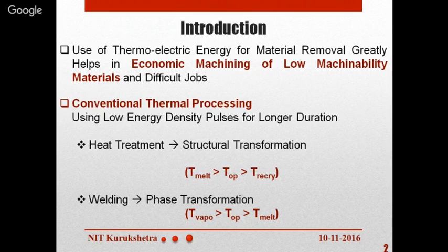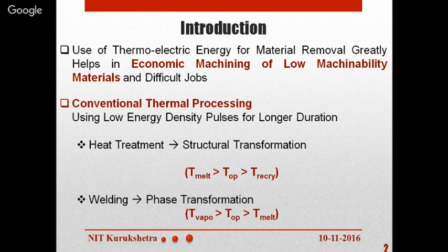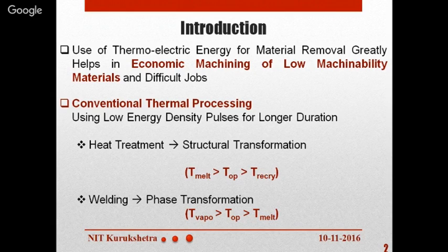For example, for annealing a 0.8% carbon steel, we keep the workpiece in a furnace and heat it above the austenite temperature — around 800 to 850°C — then allow it to cool slowly inside the furnace without further heat input, resulting in the slowest cooling rate and coarse pearlite as the final microstructure. This conventional thermal process uses low energy density pulses for longer duration with low working temperature but high working time. The second example is welding, where the working temperature is between the vaporization and melting temperature of the workpiece, for example arc welding.